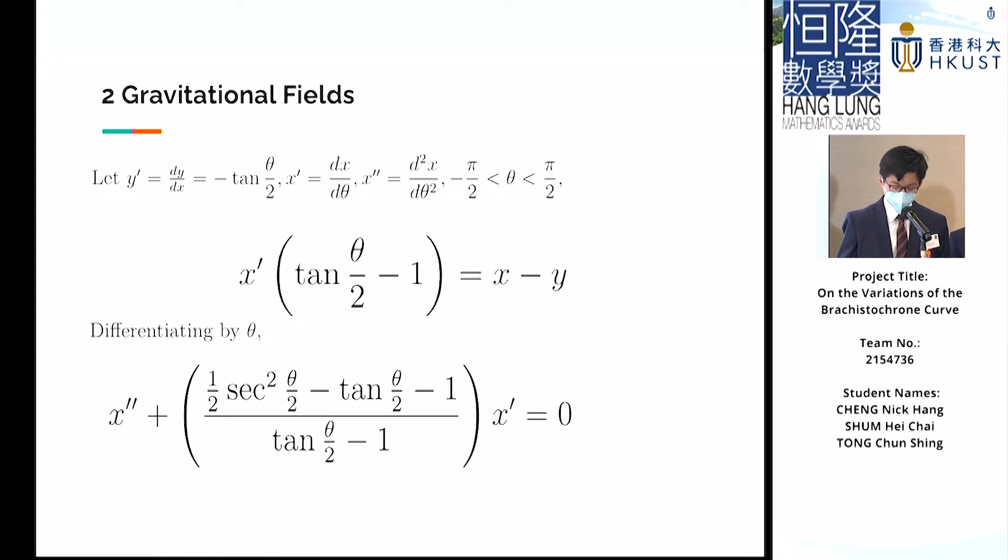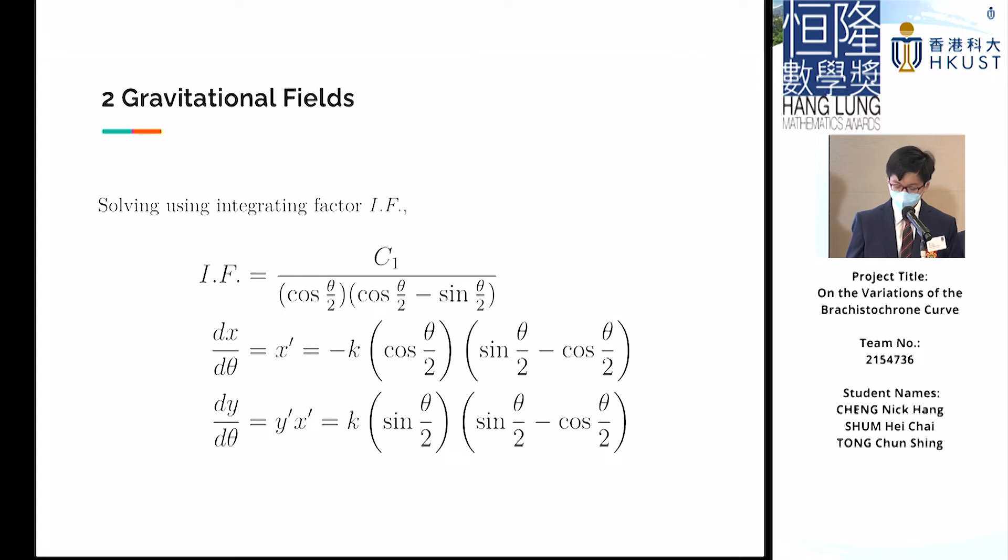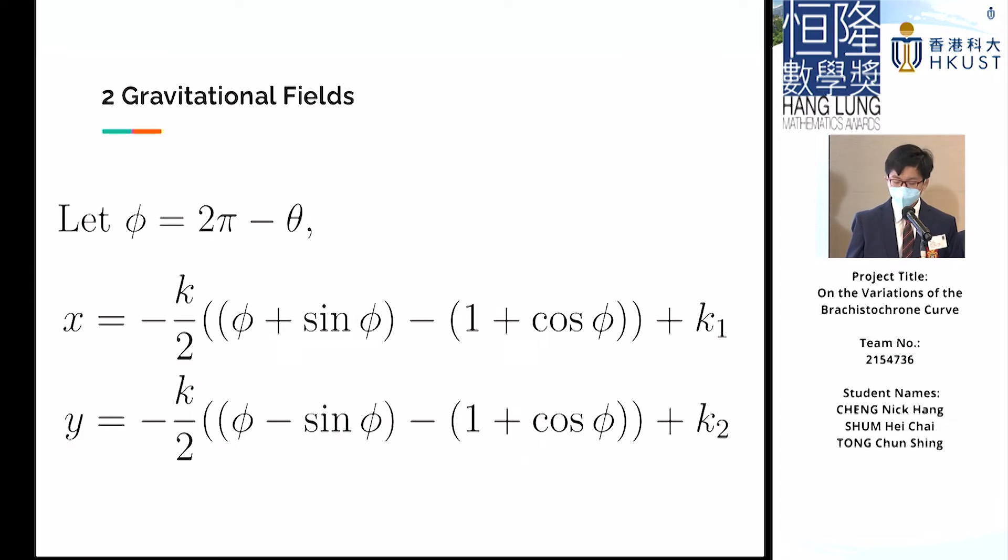We then use a trigonometric substitution and hence obtain a differential equation in x. Considering the integrating factor, we solve for both x and y in terms of θ. In order to obtain a form similar to that of the parametrized solution of the original Brachistochrone curve we had obtained previously, we let φ = 2π - θ, and we obtain the desired parametrization.